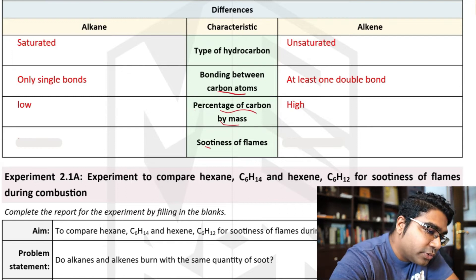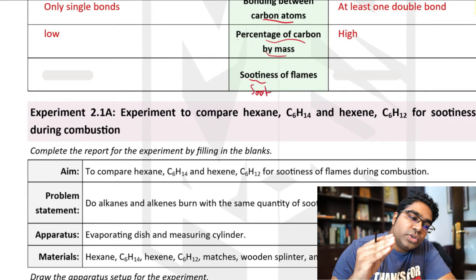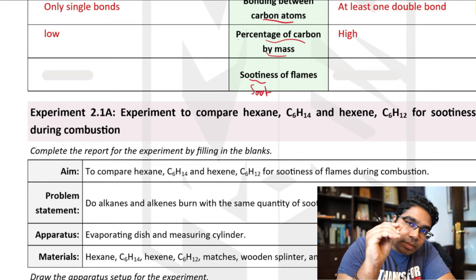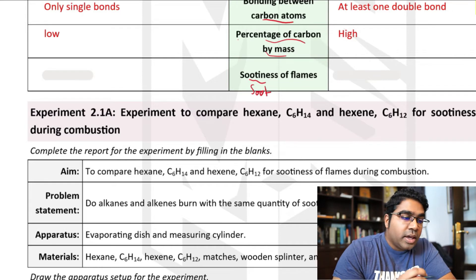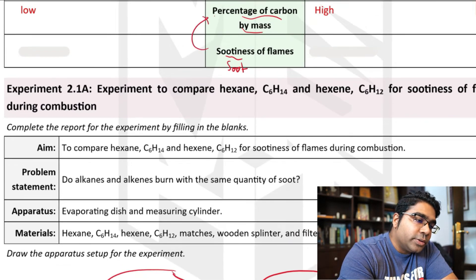And then we go to sootiness of flame. Sootiness is how much soot is produced. Soot is the carbon in the smoke, the black in the smoke. And so alkenes, this point is actually related to the percentage of carbons.